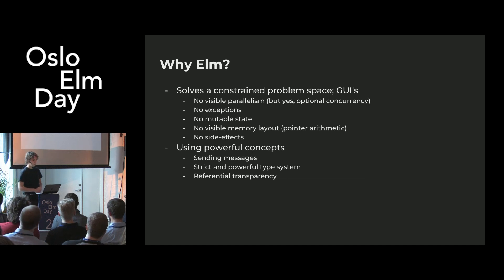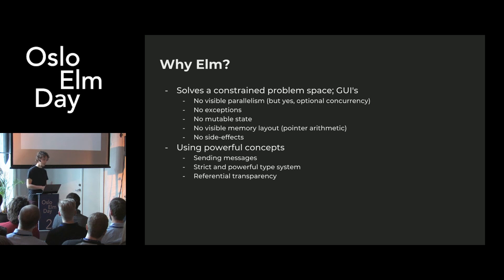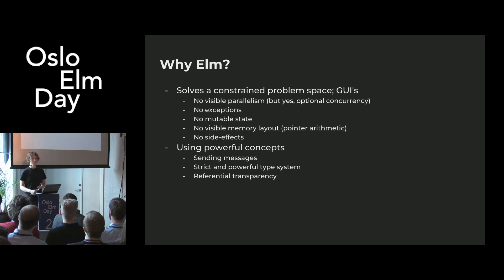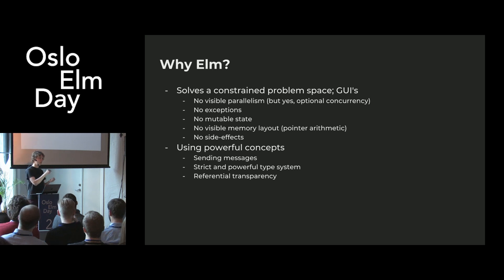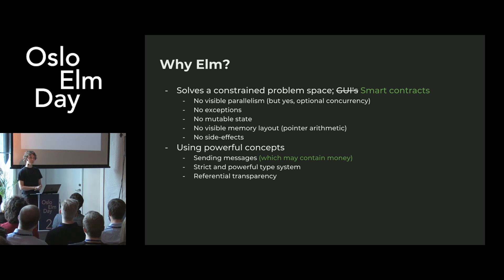We all know why we like Elm. It has a really great abstraction model. There are a lot of things we don't have to worry about, like parallelism, exceptions, and mutable state. It also has powerful features like message passing, a strict and powerful type system, and referential transparency — the property where you can replace a function call with its return value, so you can freely memoize. In our domain, we basically have the same constraints. The only real difference is that we can send money in our messages.